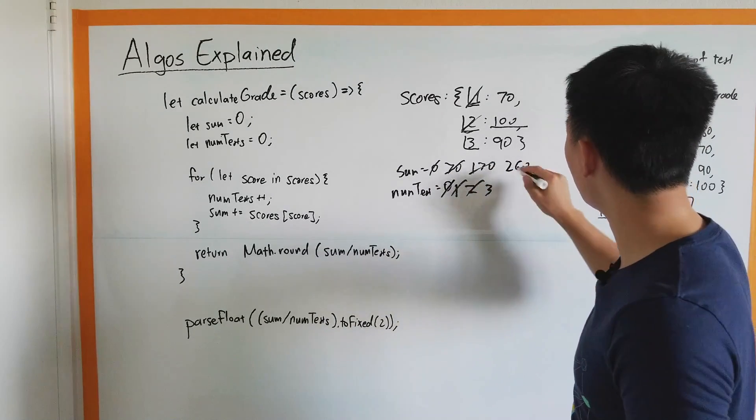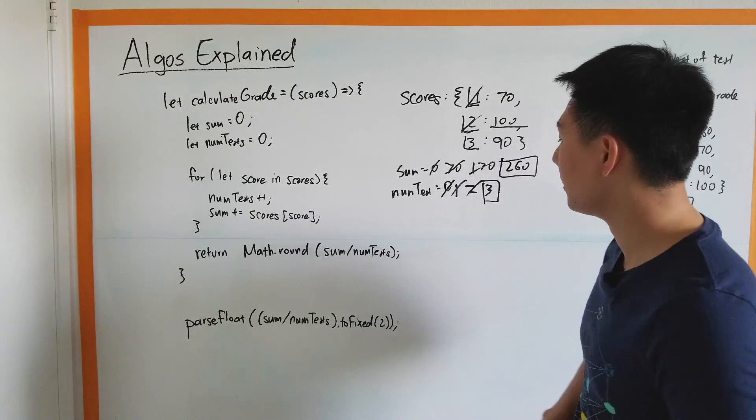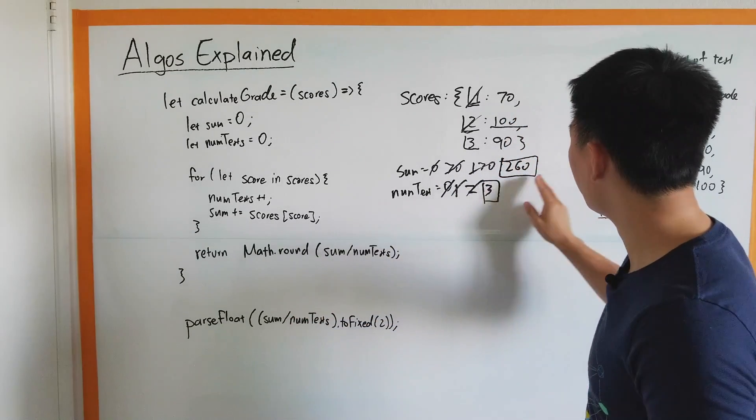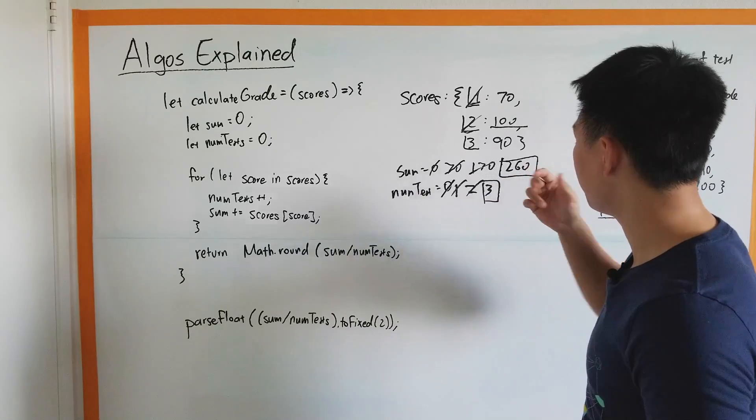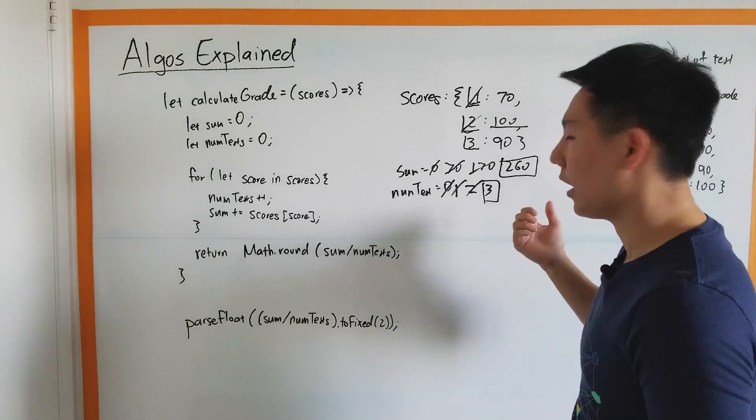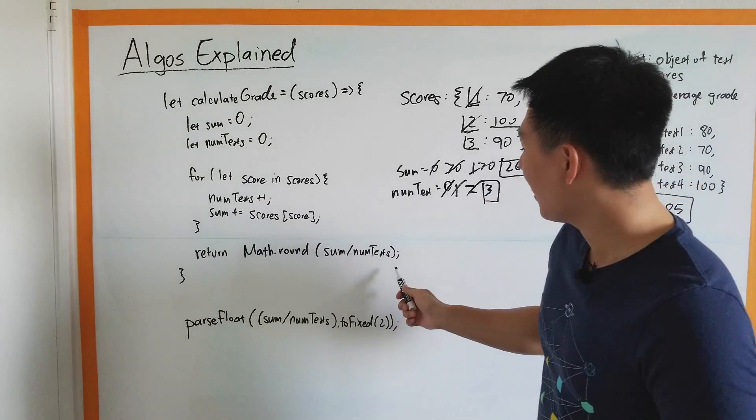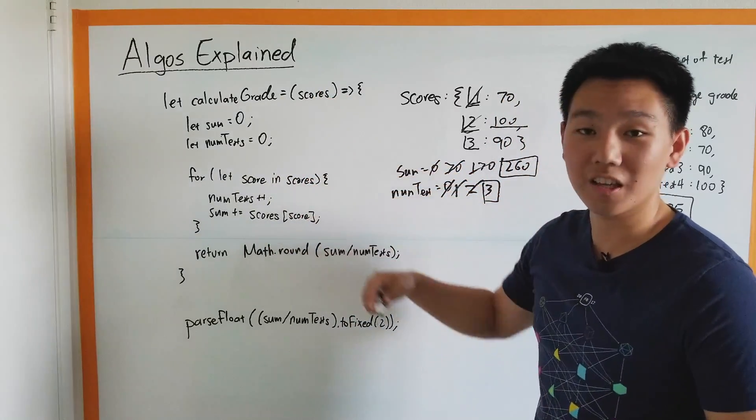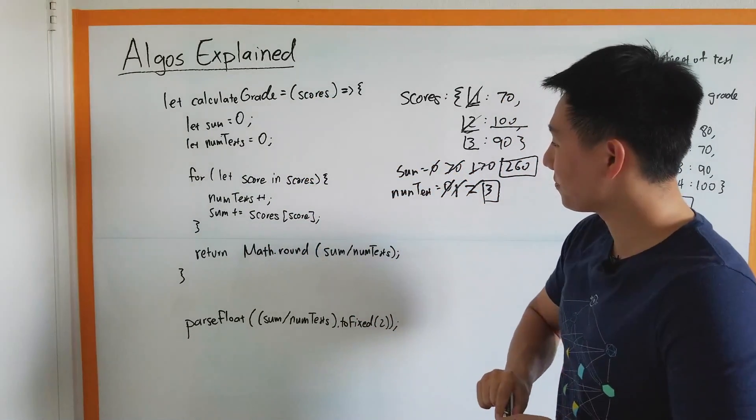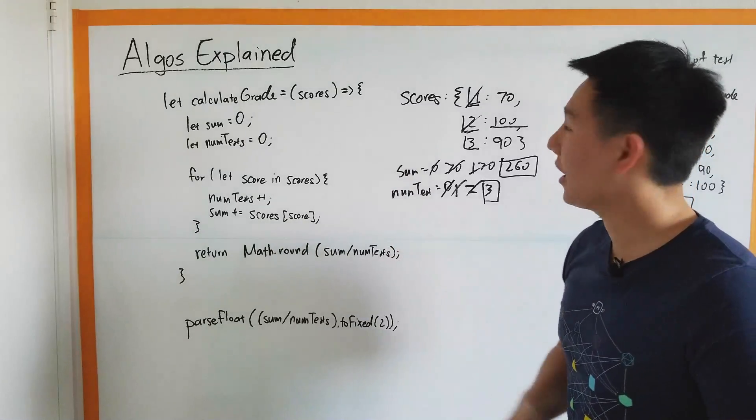Pretty much now you have these 2 numbers here, sum and numTest. Math.round the sum over the 3. At that point I think you've proven you've walked through the logic, and your code does work.